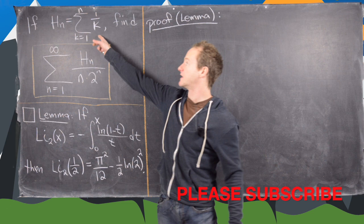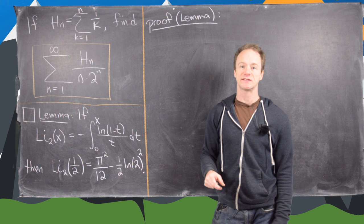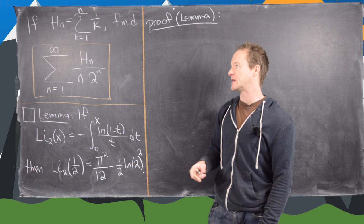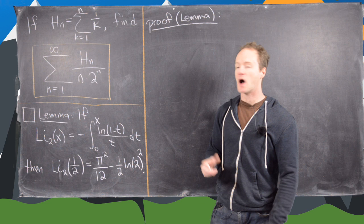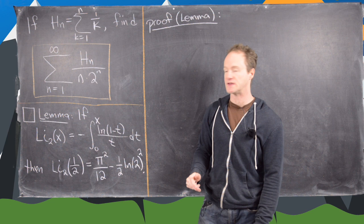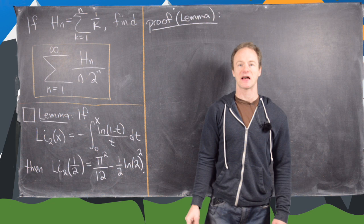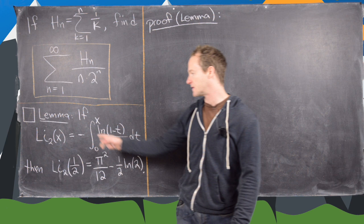In this video we're going to calculate a very interesting sum. First we want to define the nth harmonic number to be the sum as k goes from 1 to n of 1 over k. This is a sequence that's divergent as n approaches infinity, and we know that because the harmonic series itself diverges. We're going to calculate the sum as n goes from 1 to infinity of the nth harmonic number divided by n times 2 to the n, and we're going to need the following limit to do this calculation.